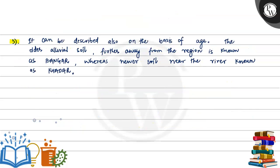The third point: alluvial soil can also be described on the basis of age. The older alluvial soil found further away from the river is known as bangar, whereas the newer soil near the river is known as khadar.